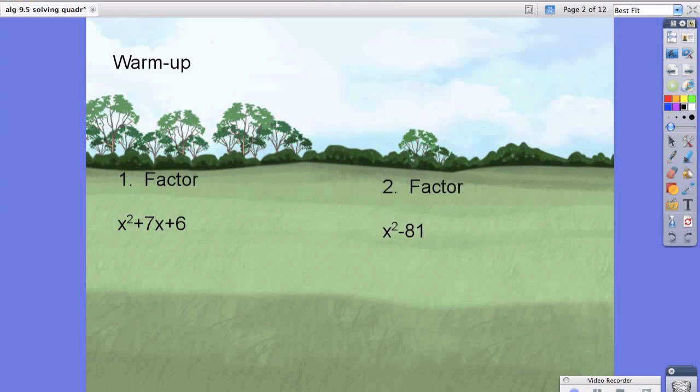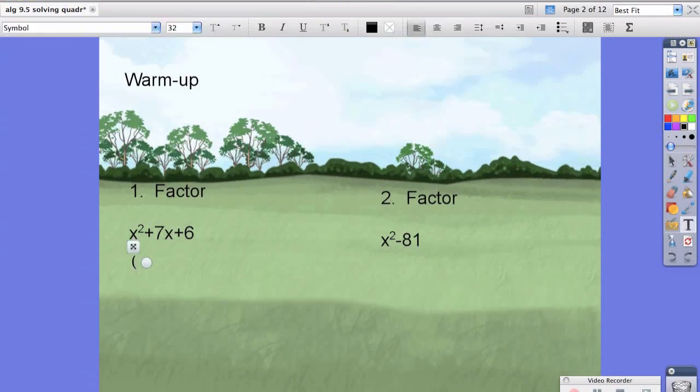Hopefully you've paused your screen and are just checking your answers now. Because we used the x-box method, we know that these two answers should be x plus 1 times the quantity x plus 6. For number 2, because it's a difference of two squares, you should have gotten x minus 9 times the quantity x plus 9.